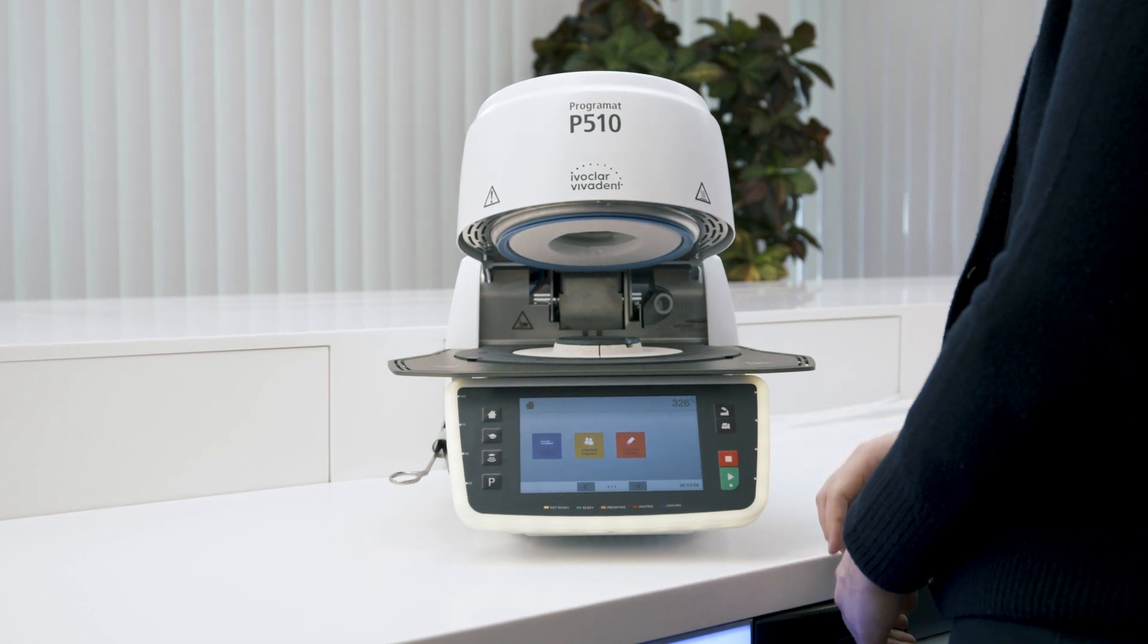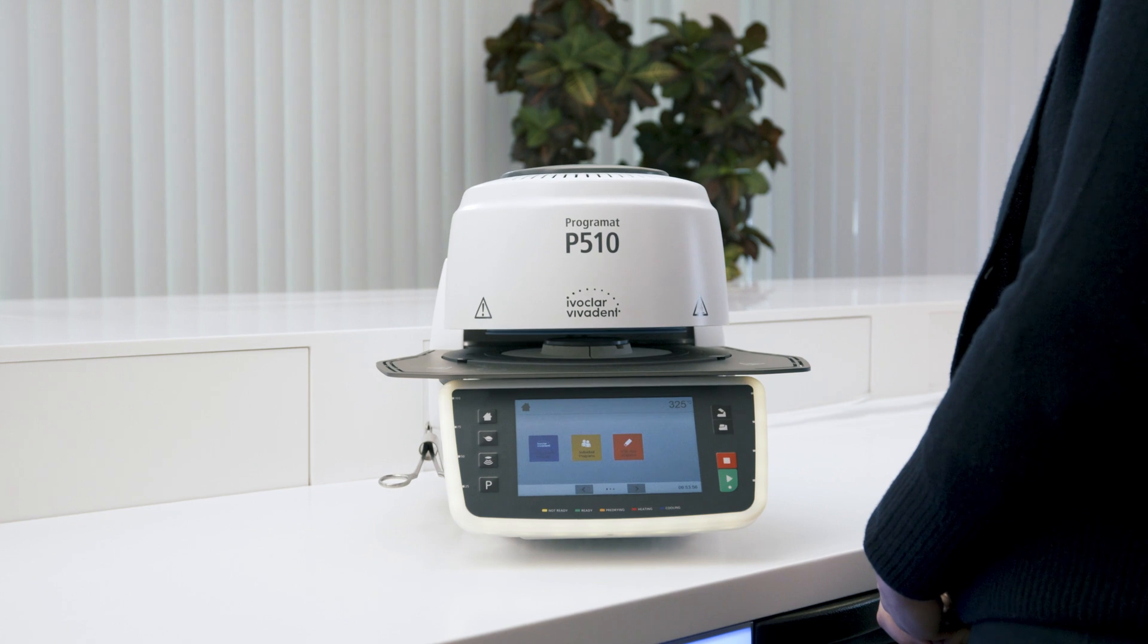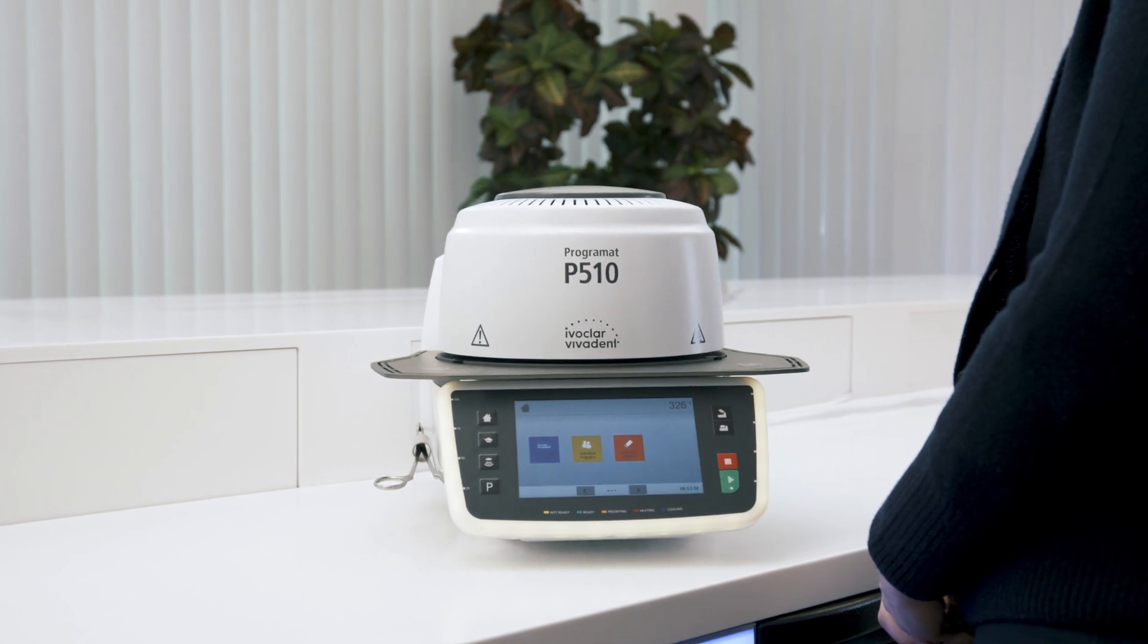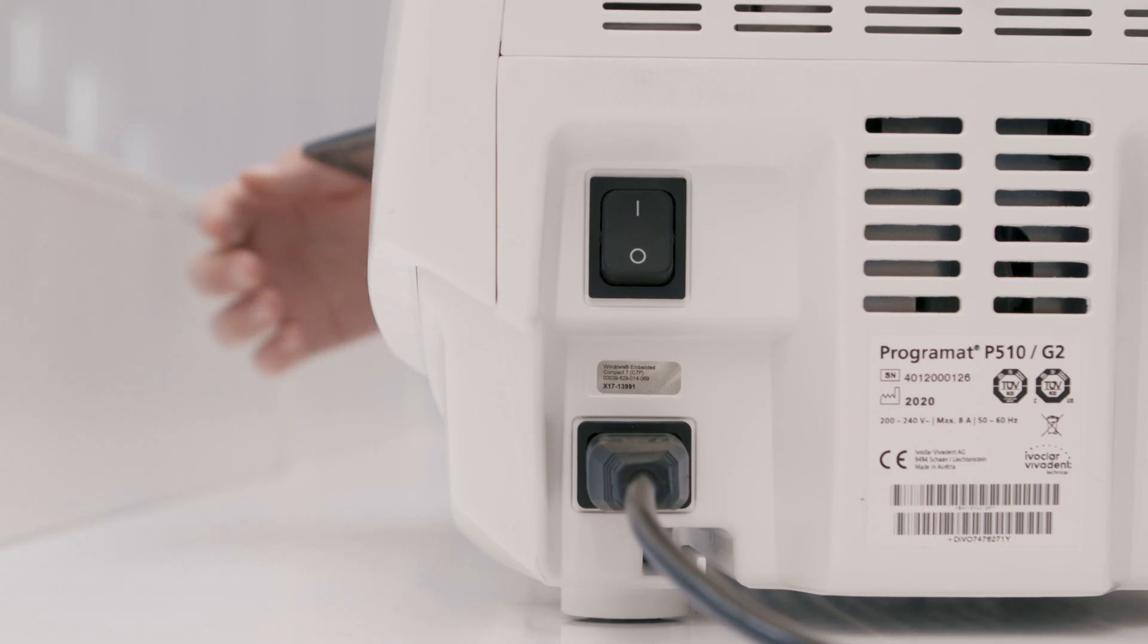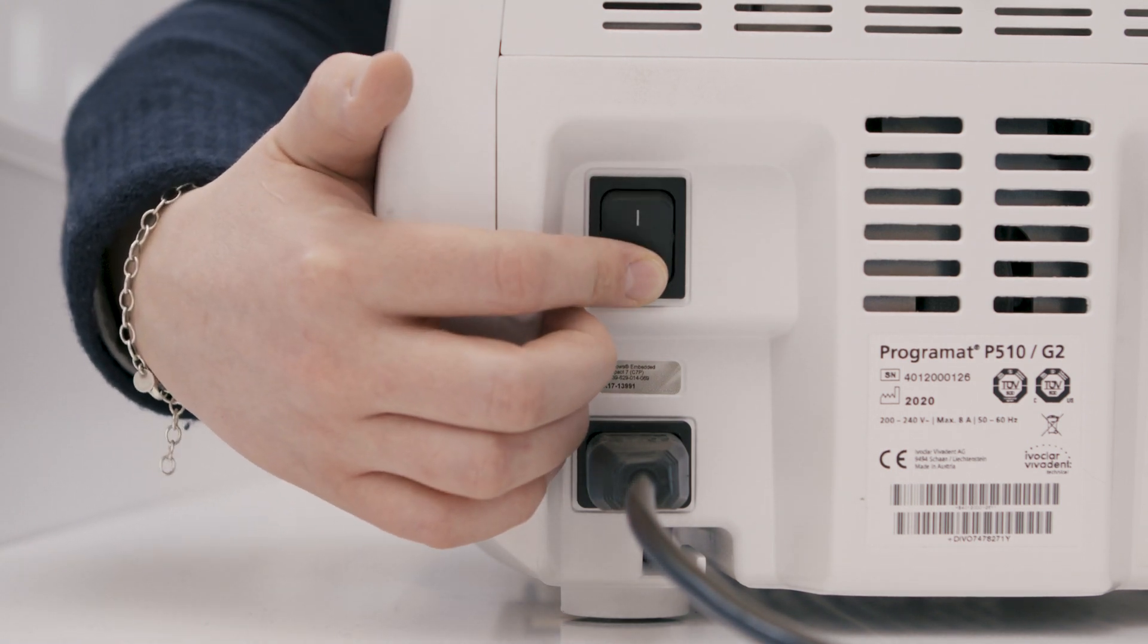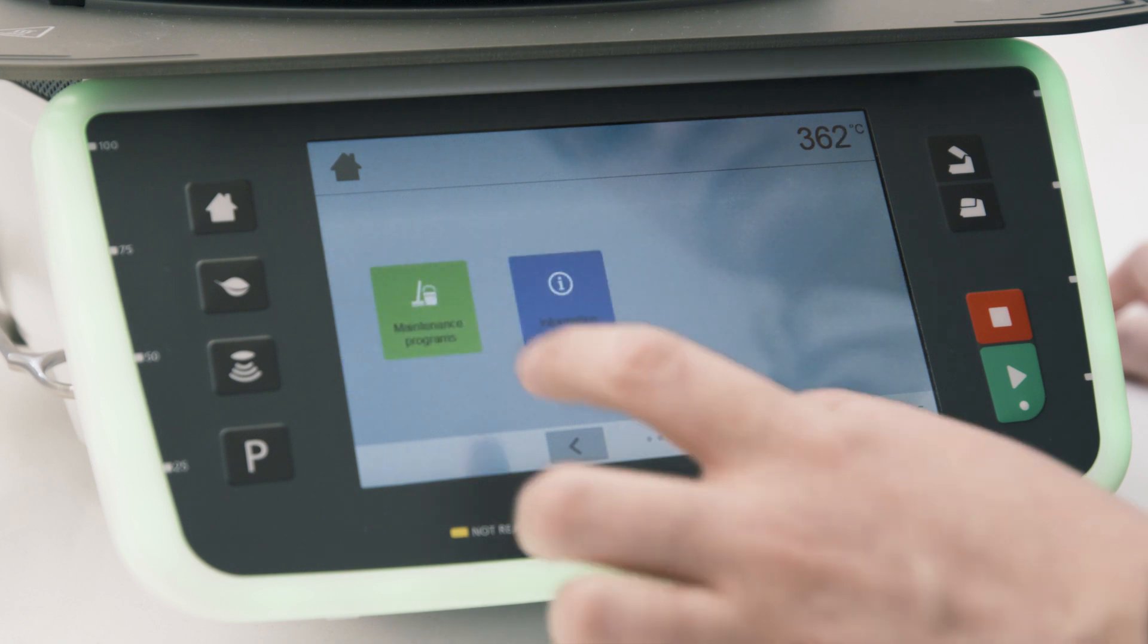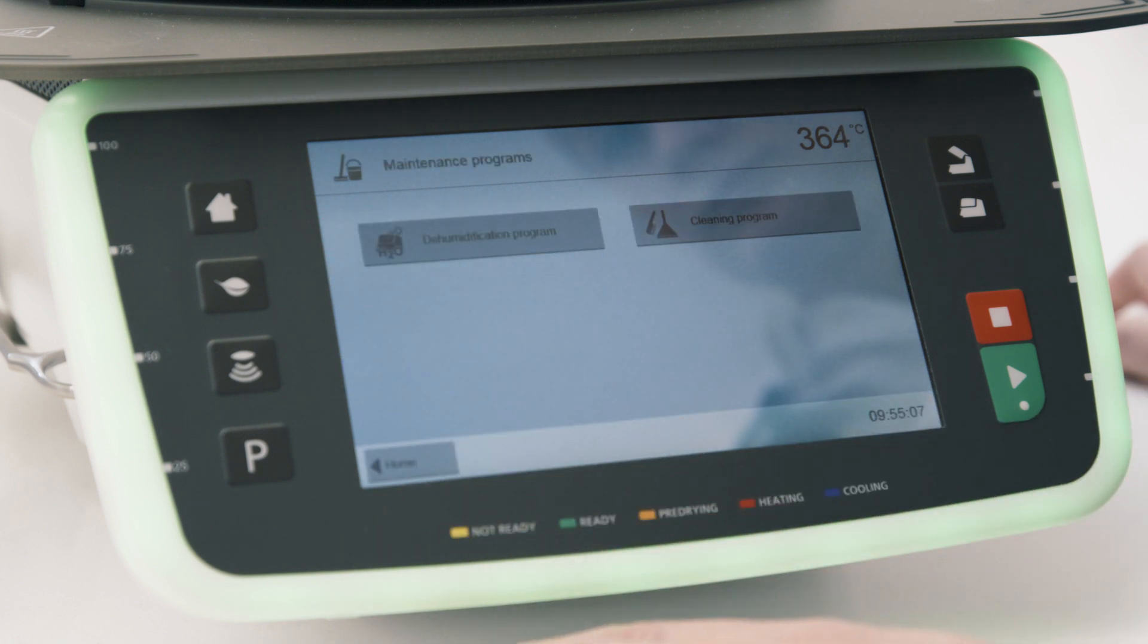Humid climates can cause the condensation of water in the firing chamber. This may impair the function of the vacuum system. For this reason, the furnace head should be kept closed when the furnace is switched off. This way, you can prevent humidity from entering the furnace. If moisture enters the furnace head nonetheless, then use the dehumidification program.